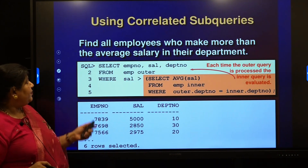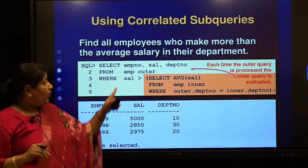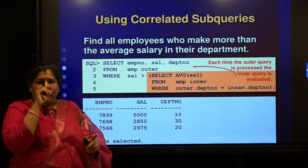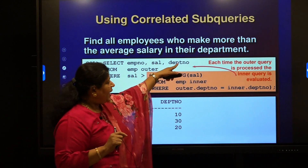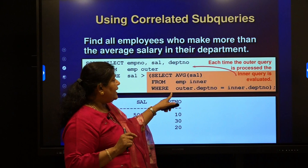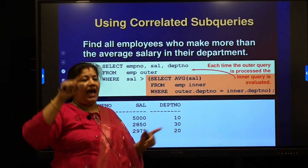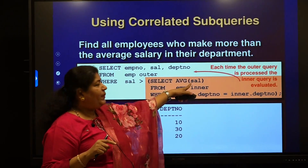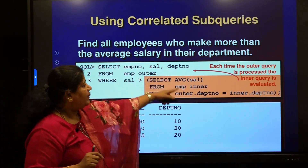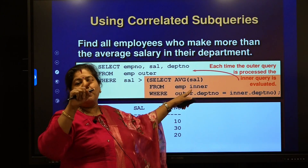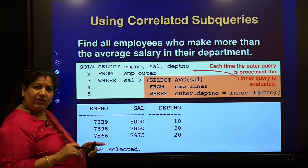Let us see an example: find all employees who make more than the average salary in their department. The outer query fetches employee number, salary, and department number. For the first row where department number is 10, the inner query — SELECT AVG(salary) FROM EMP WHERE department number is 10 — runs, calculates the average for department 10, and compares it with that row's salary. For the next row with department 30, the inner query runs again for department 30. For every row of the outer query, the inner query gets processed.